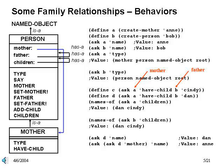So what behaviors do we want the methods in our classes to have? Here's an example using the new classes, which illustrates some of these behaviors. We'll create a mother named Ann and a father person named Bob. We can ask them their names, types, and so on. We now ask Ann to have a child with Bob, with the new child to be named Cindy. After this, we ask Ann to have another child, in this case named Dan. We can then ask Ann or Bob about the names of their children. Or we can ask Dan for the name of his mother, and get back Ann, as shown here.